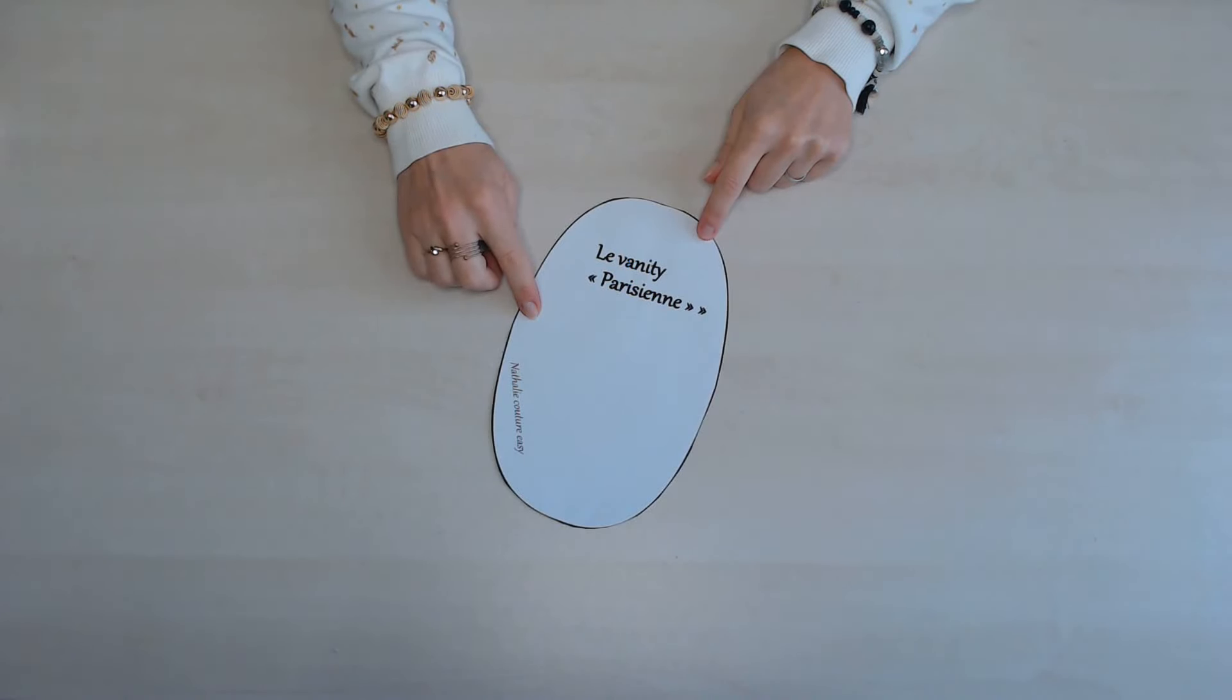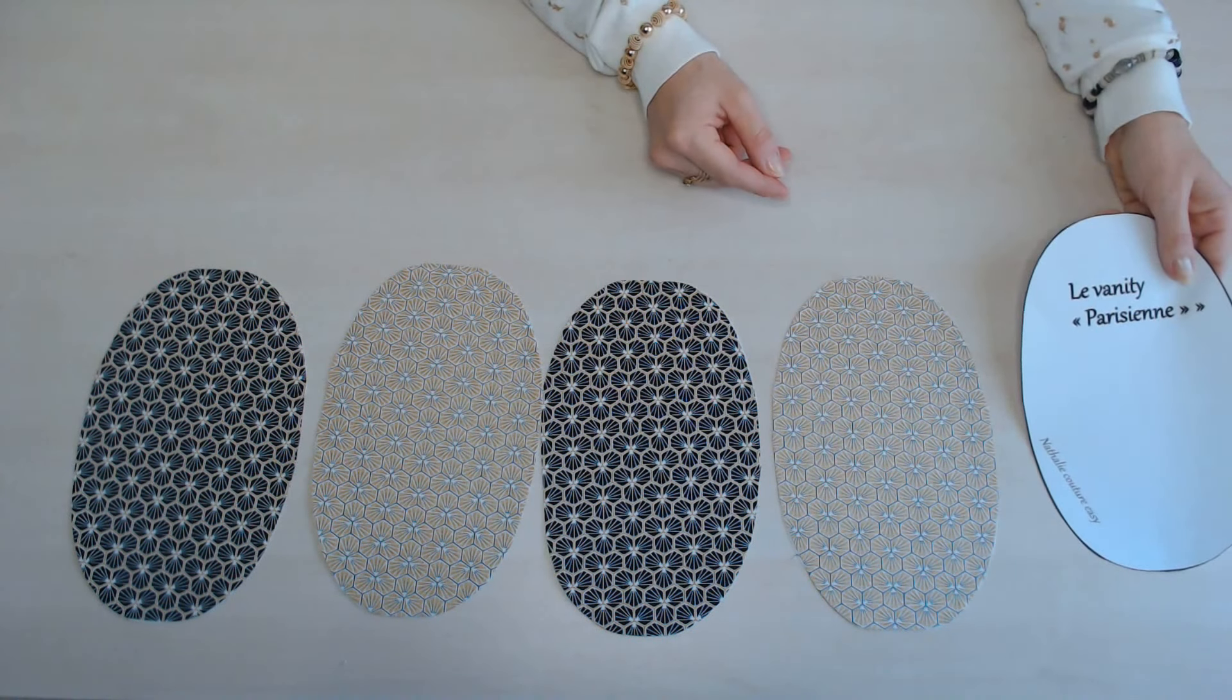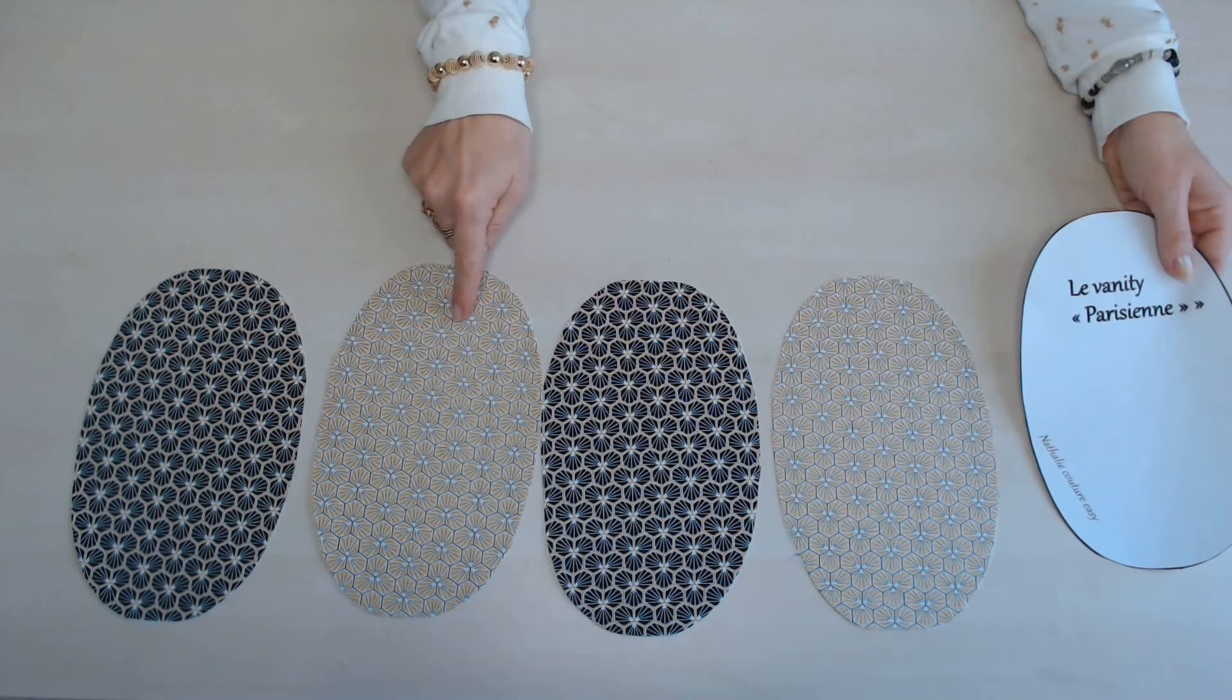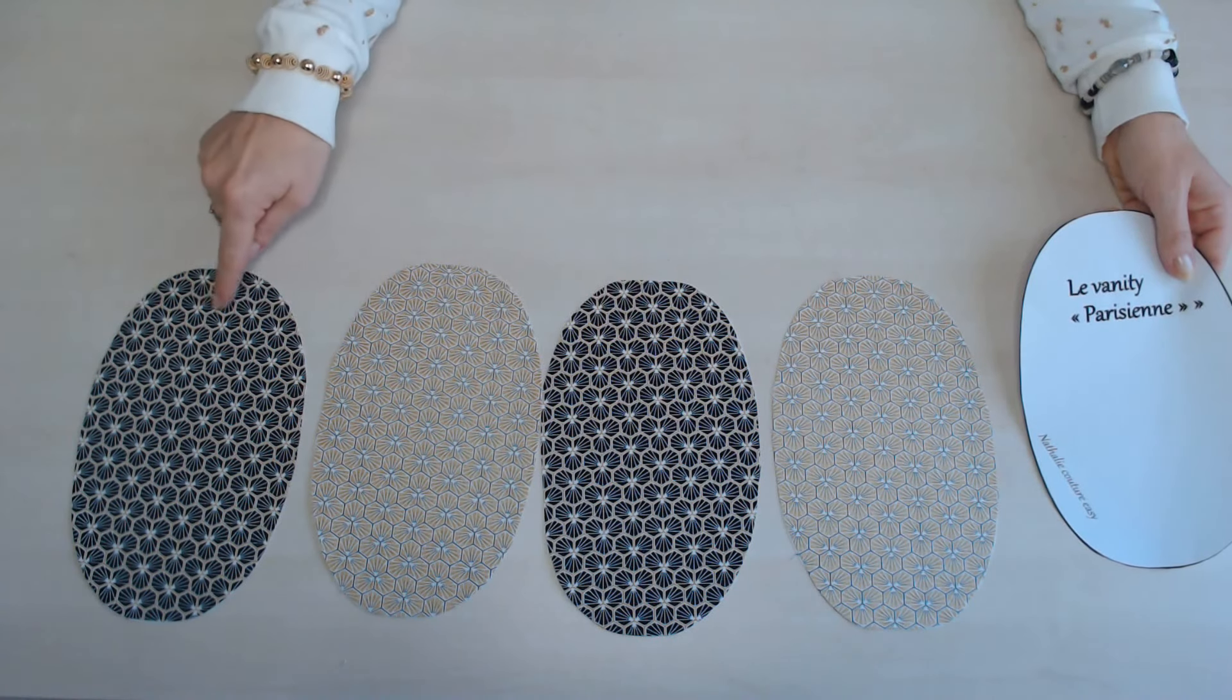Pour le confectionner, vous aurez besoin du gabarit et il faudra le couper quatre fois, deux fois pour l'intérieur et deux fois pour l'extérieur.